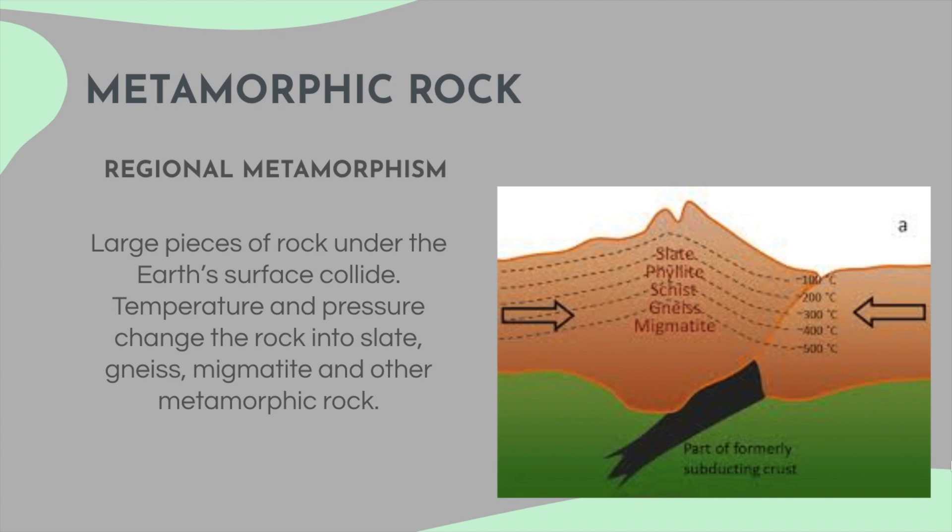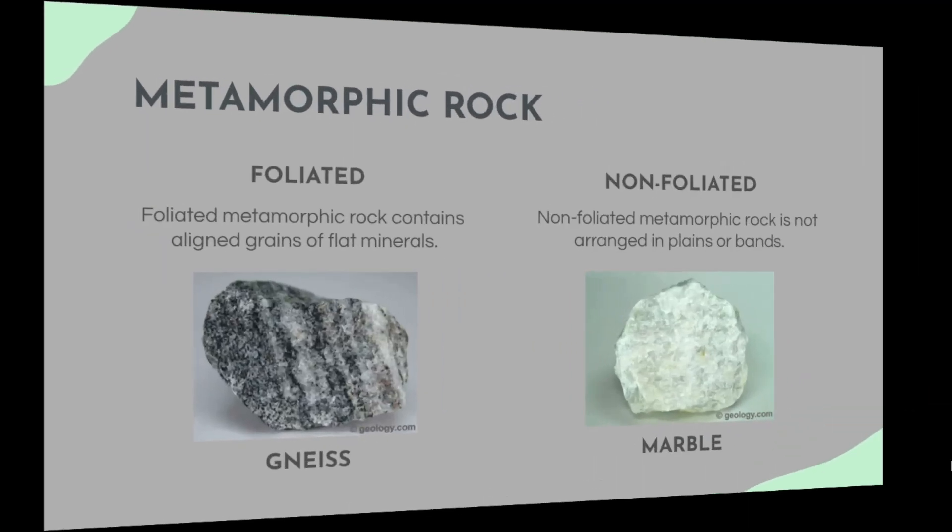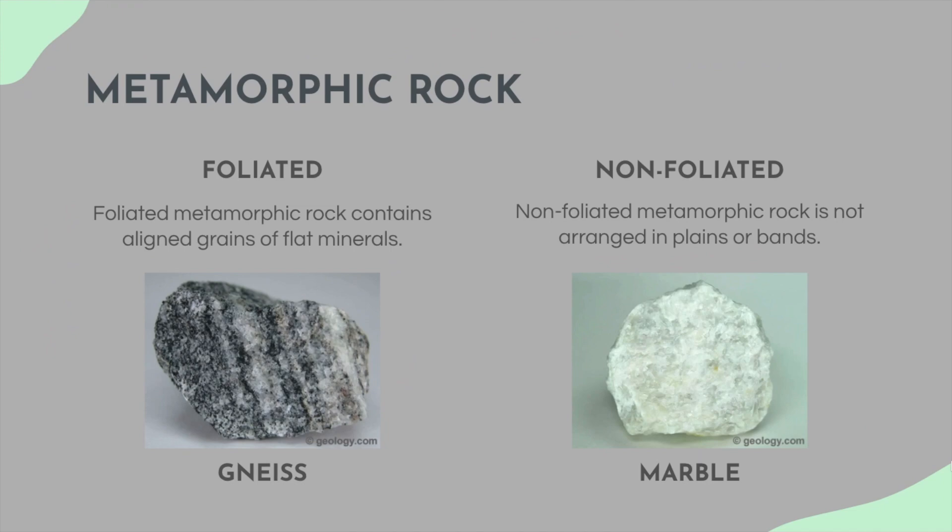There's also a type called regional metamorphism. Large pieces of rock under the earth's surface collide, and temperature and pressure change the rock into slate, gneiss, migmatite, and other metamorphic rock. Metamorphic rock can be foliated or non-foliated. Foliated metamorphic rock contains aligned grains of flat minerals. Metamorphic rock can also be non-foliated — it is not arranged in planes or bands, like marble.